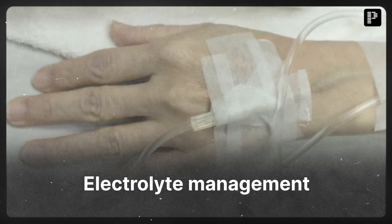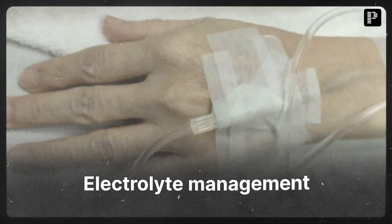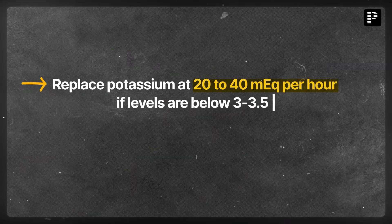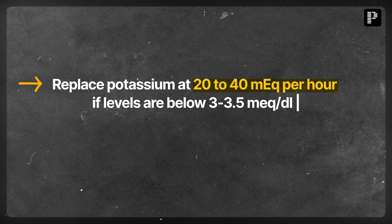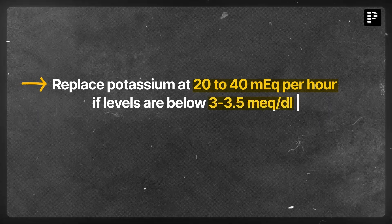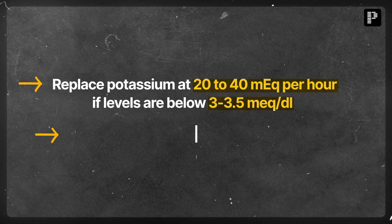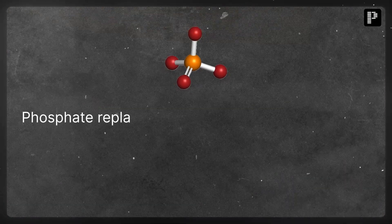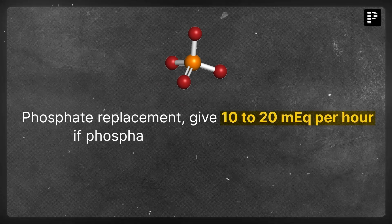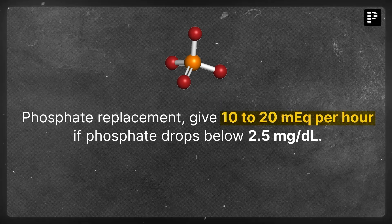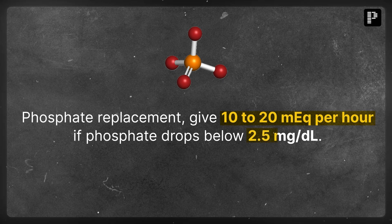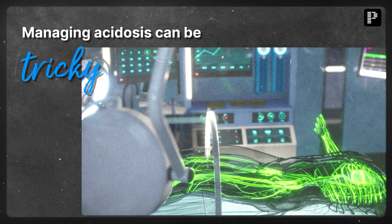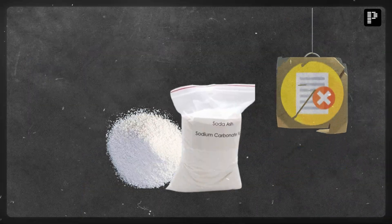Electrolyte management in DKA is crucial, particularly potassium. Replace potassium at 20 to 40 milliequivalents per hour if levels are below 3 to 3.5 milliequivalents per liter. Monitor potassium levels throughout. For phosphate replacement, give 10 to 20 milliequivalents per hour if phosphate drops below 2.5 milligrams per deciliter.